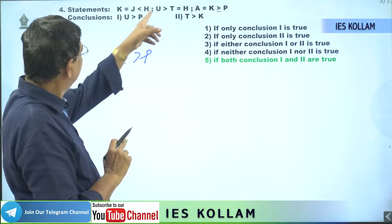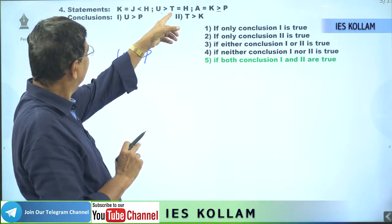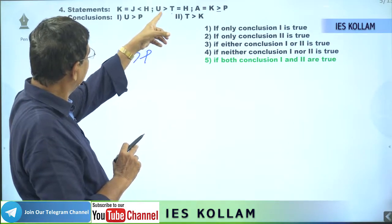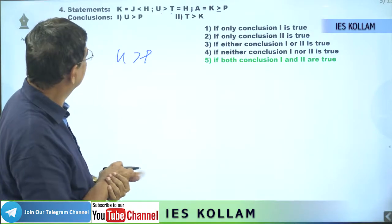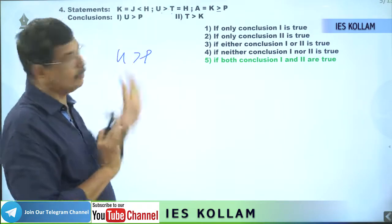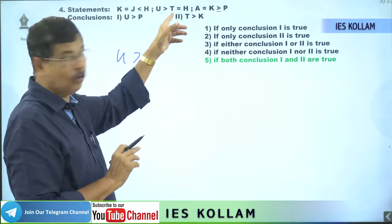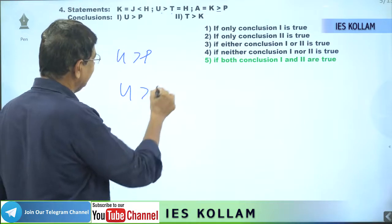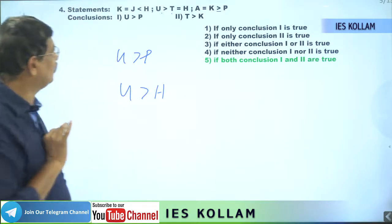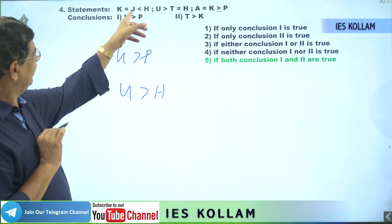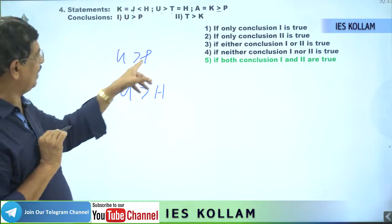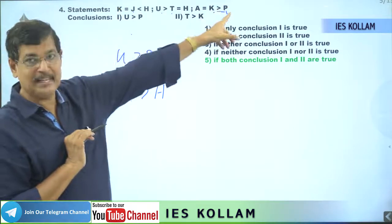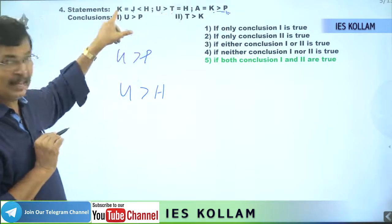Here, u greater than t is there. The term having u is this second statement only. And t and h are both the same, so either we can take t or h, and from there we can start. u greater than h. Now h we can connect with j or k. Here we need to connect with k and p, because p is only in the third statement. Therefore we are making the relation with p — that is the objective of taking k instead of j.